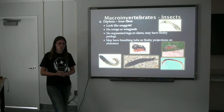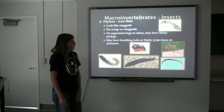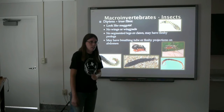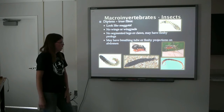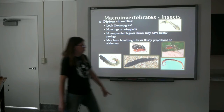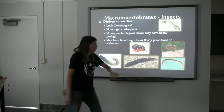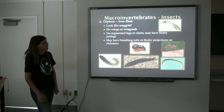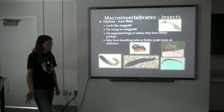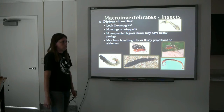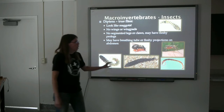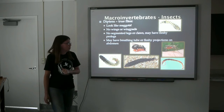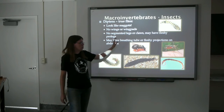The Diptera are true flies. This is a huge order of insects, and most of the aquatic larvae look very much like maggots. Usually they don't have any legs — they may have some fleshy pro-legs like a caterpillar. Some will have a visible head; others will not. They will not have wings, wing pads, or any segmented legs. They may or may not have a breathing tube on their abdomen. A lot of these that do have a breathing tube can live in very stagnant, very polluted water as they're breathing atmospheric oxygen. These turn into annoying things like mosquitoes and black flies.